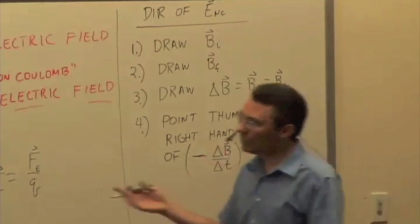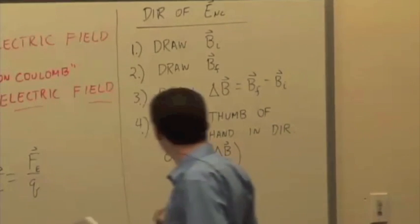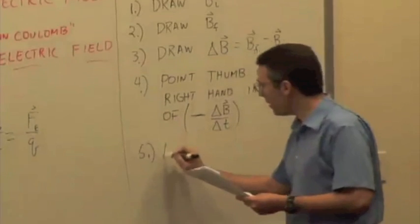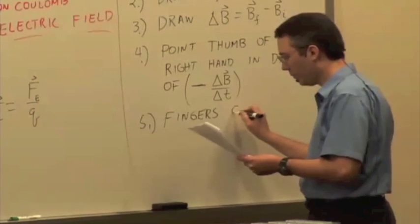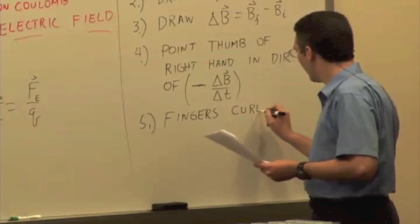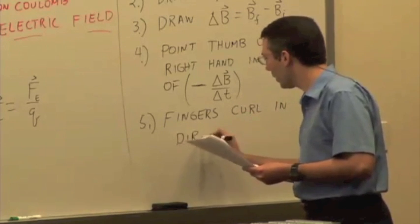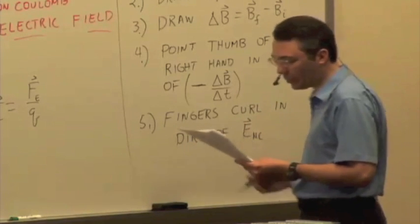And this negative sign is showing up here, so that's why we need this negative dB/dt direction. And then the fingers of your right hand curl around in the direction of the non-Coulomb electric field.